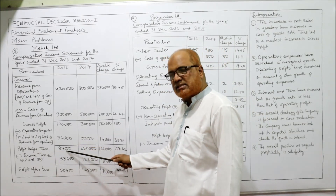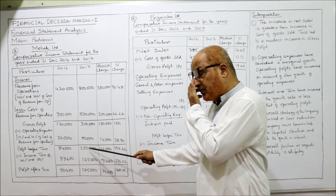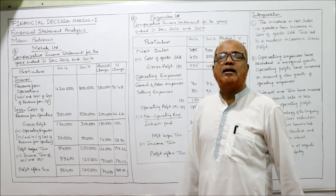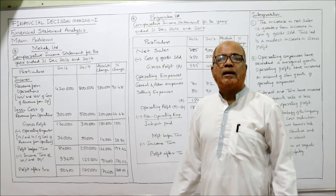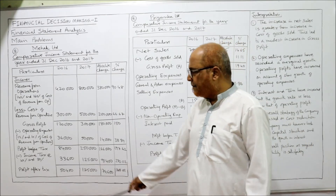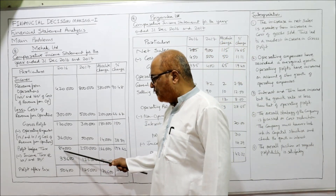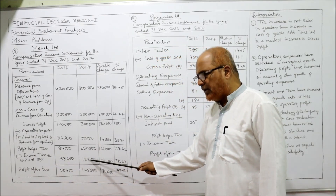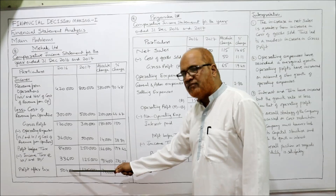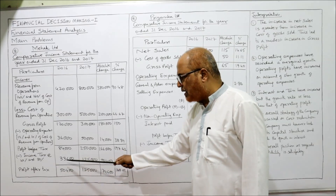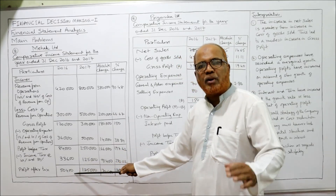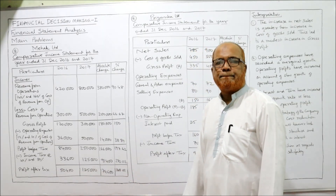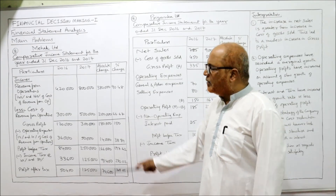Current year: 3 lakh minus 50,000 = 2,50,000 profit before tax. Income tax is given as 40% last year and 50% current year. So 40% of 84,000 = 33,600; 50% of 2,50,000 = 1,25,000. Deducting tax: 84,000 minus 33,600 = 50,400 profit after tax last year; 2,50,000 minus 1,25,000 = 1,25,000 profit after tax current year.